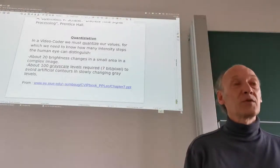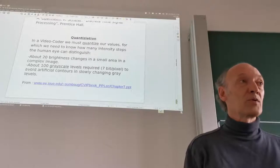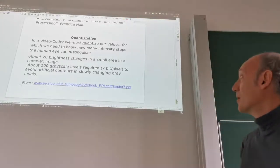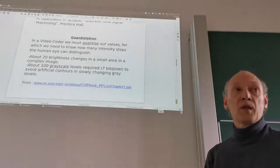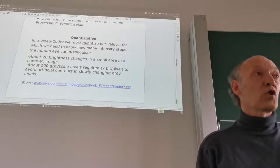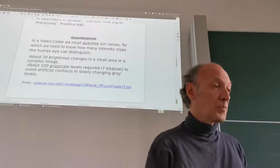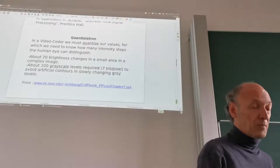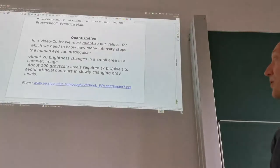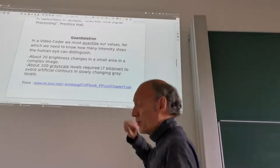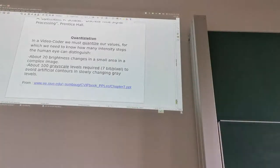So if we have a grayscale image, we encode it using 8 bits, meaning grayscale values from 0 to 255. For color images, those three color components are quantized using 8-bit representations with corresponding quantization step sizes.